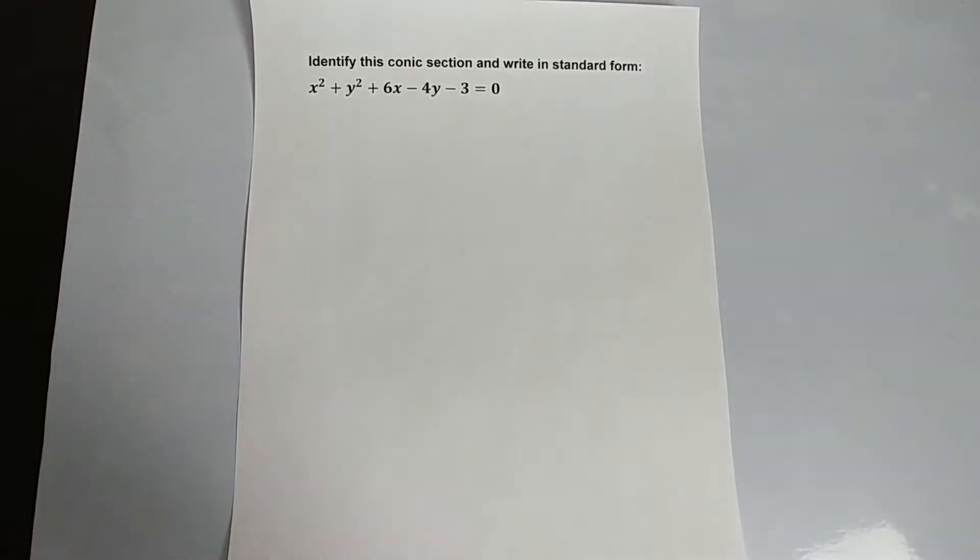Hey there, welcome to another edition of SolveMyMath Homework's video solutions. This problem didn't say what class it was, so we're going to say this could be geometry, pre-calc, or algebra 2, because conic sections are done in all three classes. It says to identify the conic section and write it in standard form. We've got x squared plus y squared plus 6x minus 4y minus 3 all equals 0.